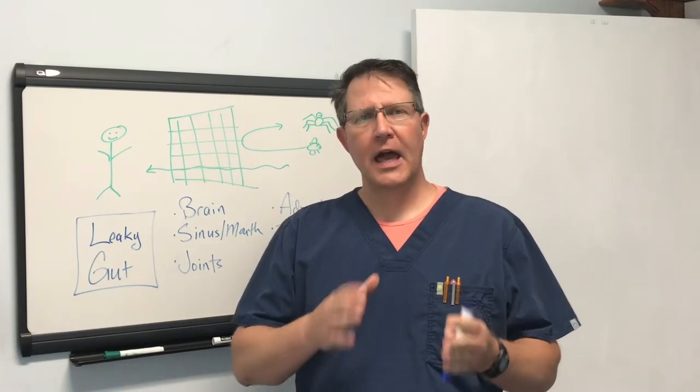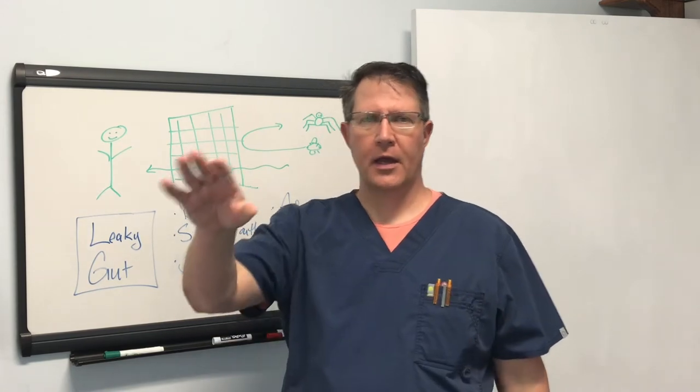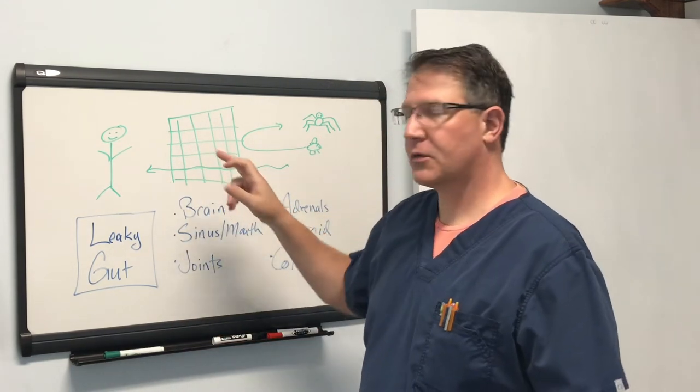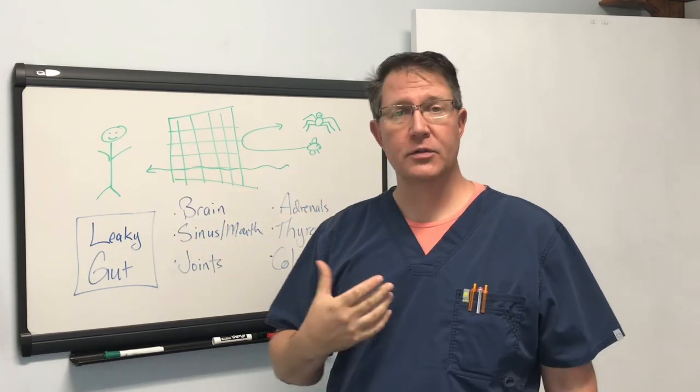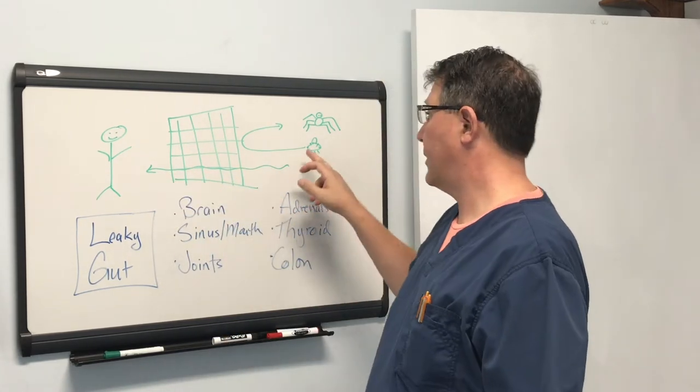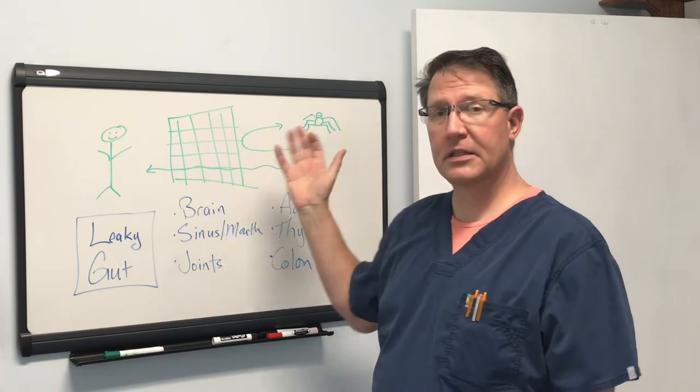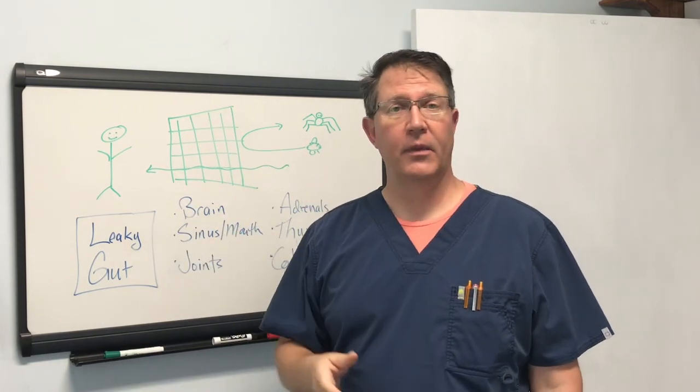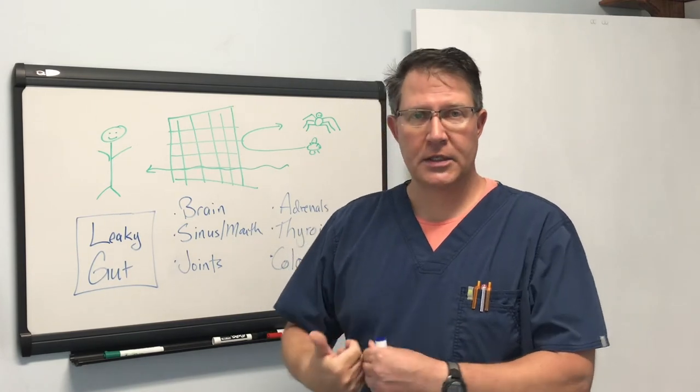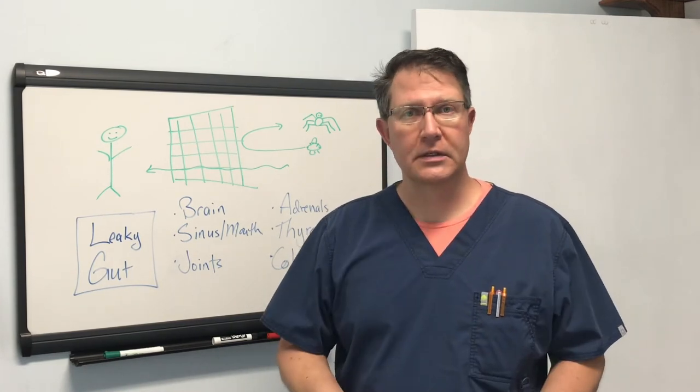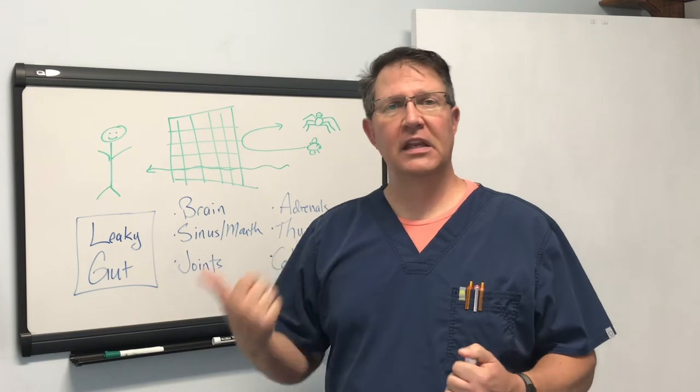The guts actually work like a screen on a window. The purpose of a screen on a window is to let fresh air into the house, which is what we want, and keep bugs and flies and spiders and things outside and keep them from getting in. The guts are supposed to allow good things into our body like nutrients and keep bad things from getting into our system.